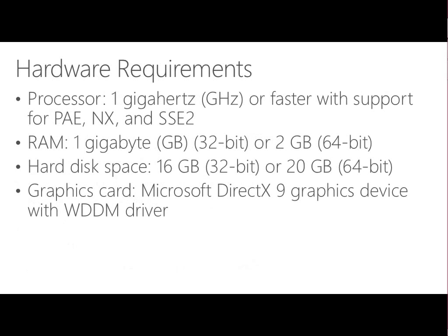What do we need to be able to install? The requirements are actually not too harsh. We need to have a processor of one gig or faster. We do have to have support for PAE, NX, and SSE2 - and that's the thing that may trip you up with some of the older machines, so make sure you check that out before you try to do an upgrade, because otherwise it just won't work and will reject you before you get started. For memory, you need at least one gig for 32-bit or two gig for 64-bit.